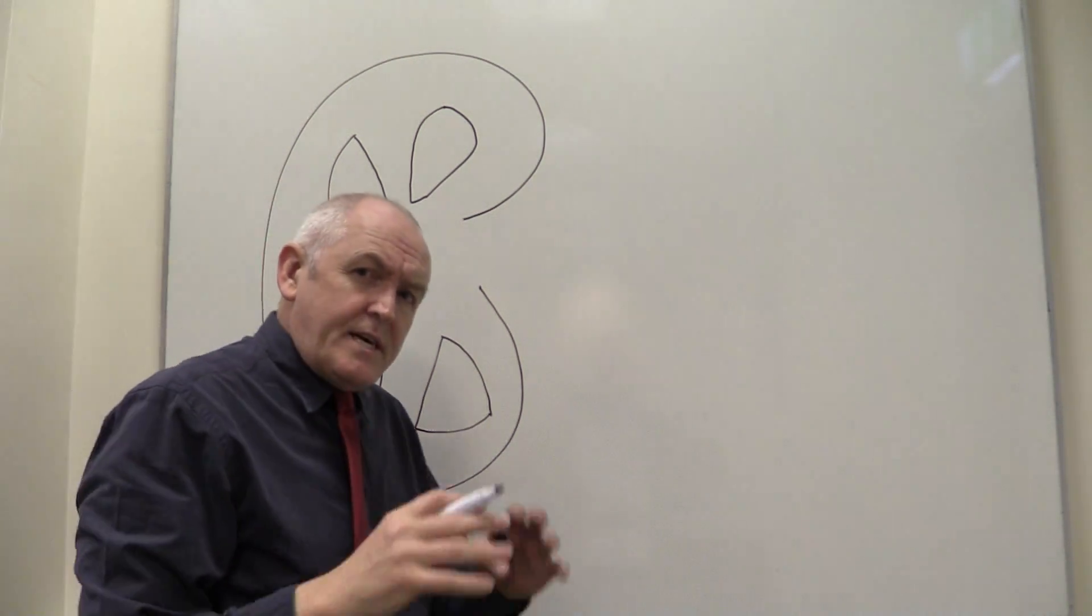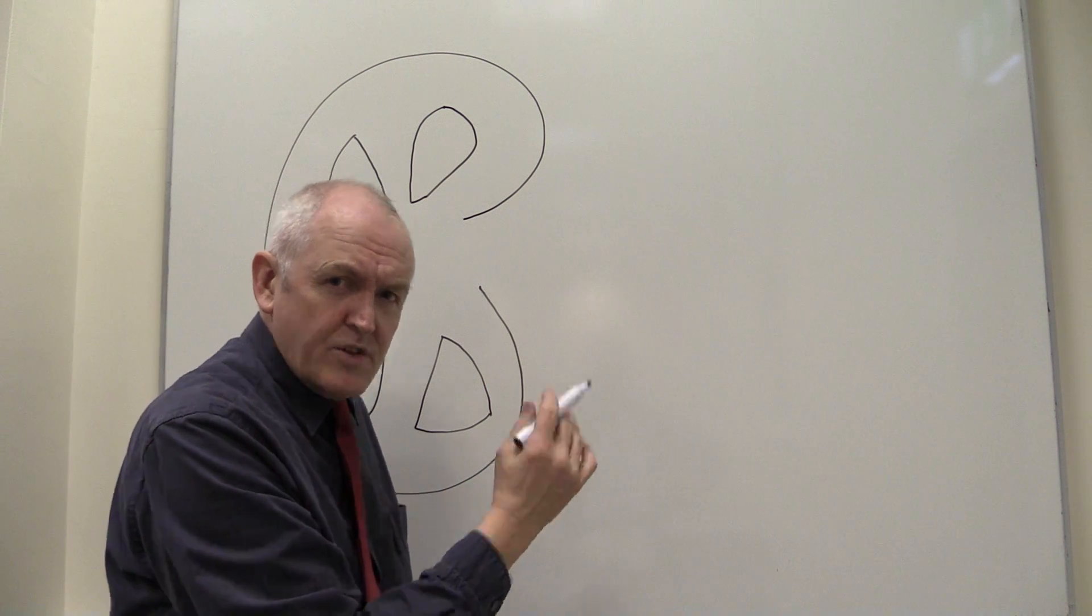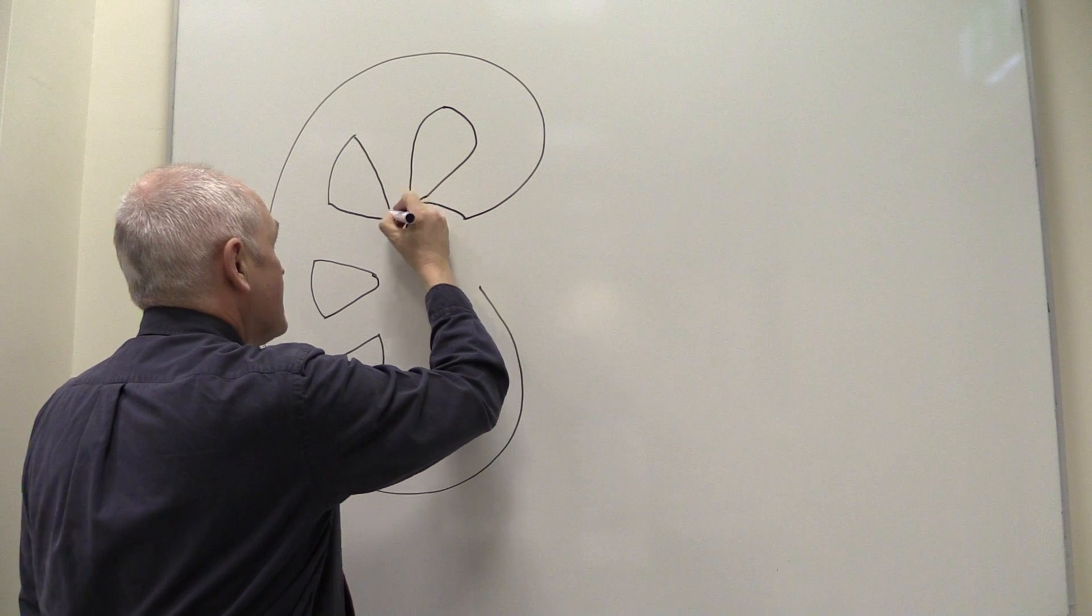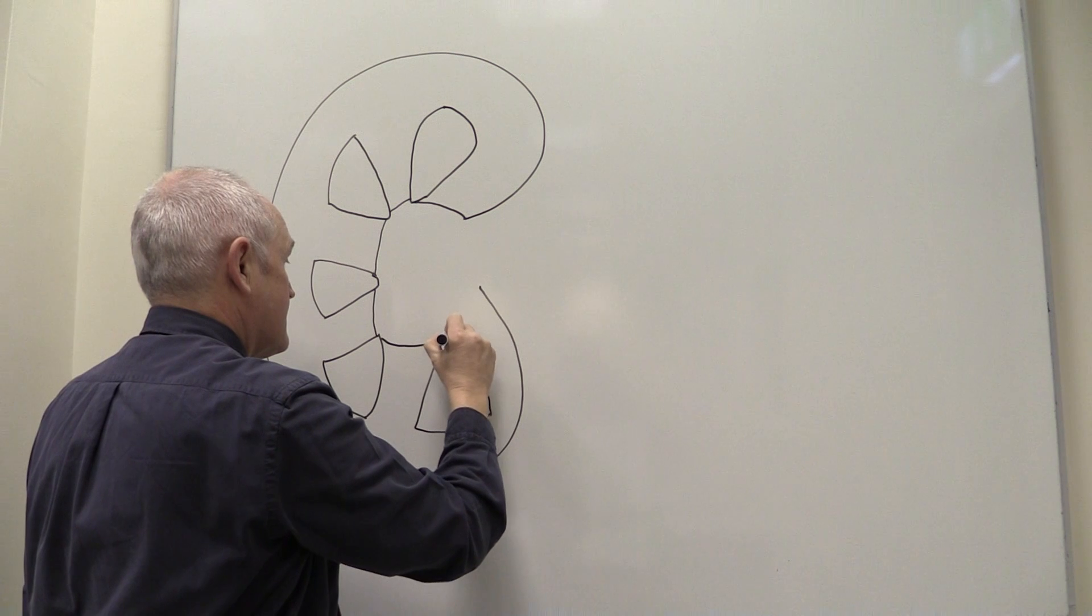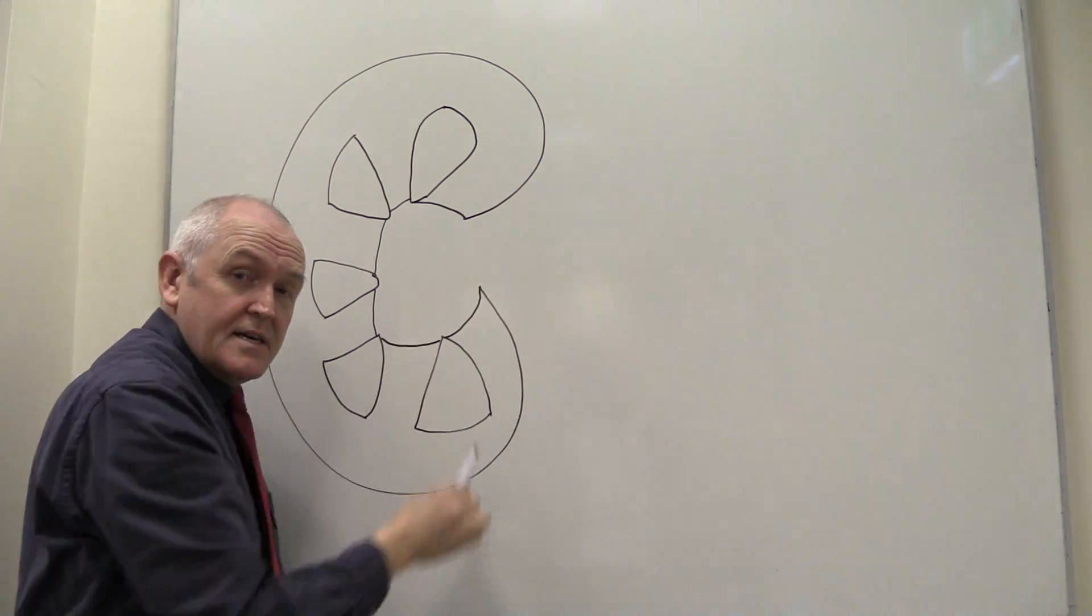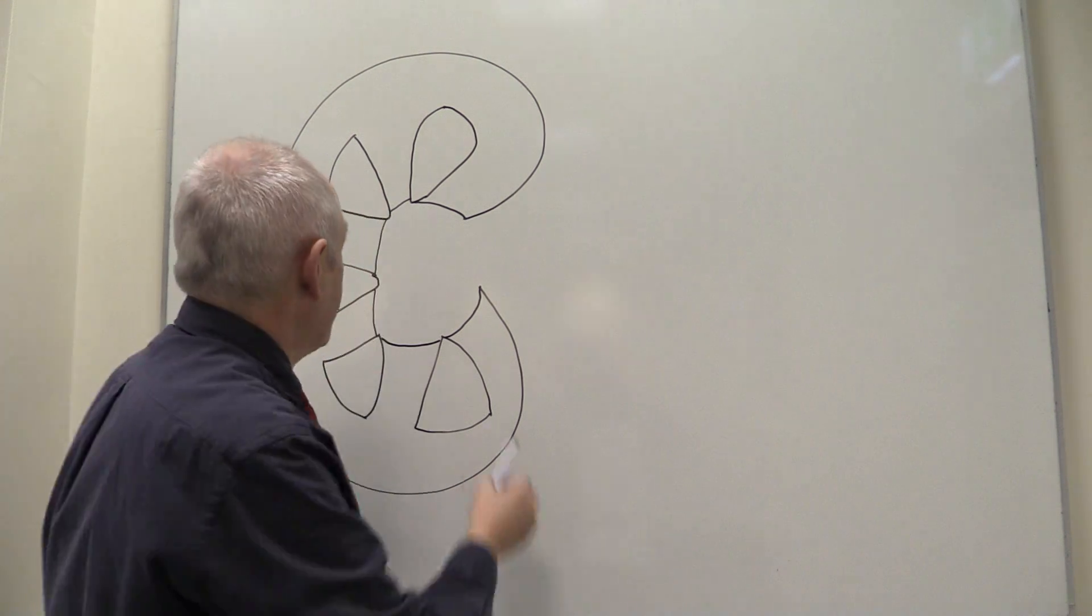Now the kidney is essentially, in one respect, hollow. There's a hollowed out area in the middle. So in the middle here there's a hollowed out area, and this hollowed out area here is called the renal sinus.